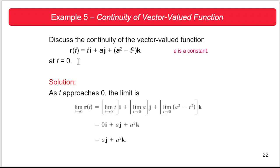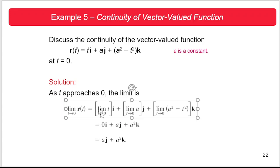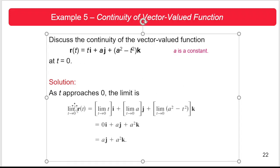As an example, discuss the continuity of the vector-valued function r(t) = ti + aj + (a² − t²)k at t = 0. To show this function is continuous, we must show that the limit of r(t) as t approaches 0 exists, that r(t) is defined at t = 0, and that the value r(0) equals the limit of r(t) as t approaches 0. If all three conditions hold, we can say the function is continuous at t = 0.